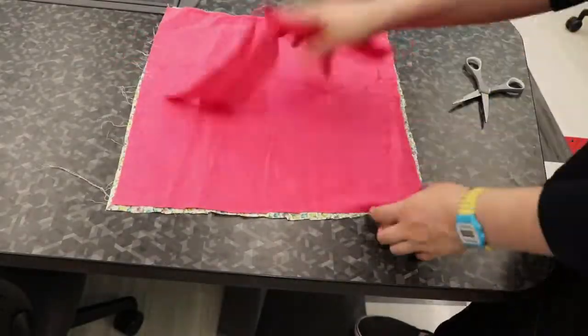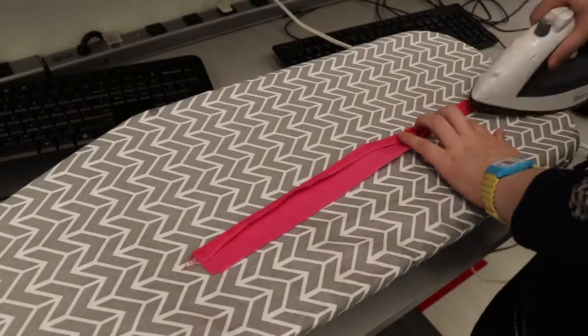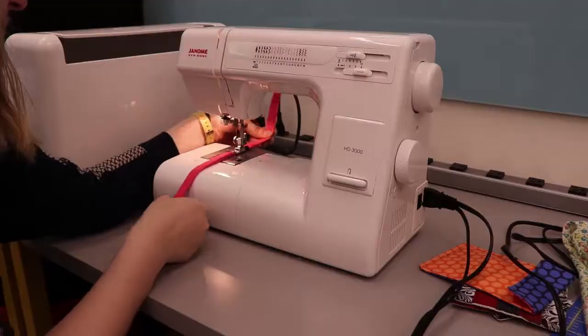I also cut two strips to be the ties. Next, I folded the ties over, ironed them, and then sewed them closed.